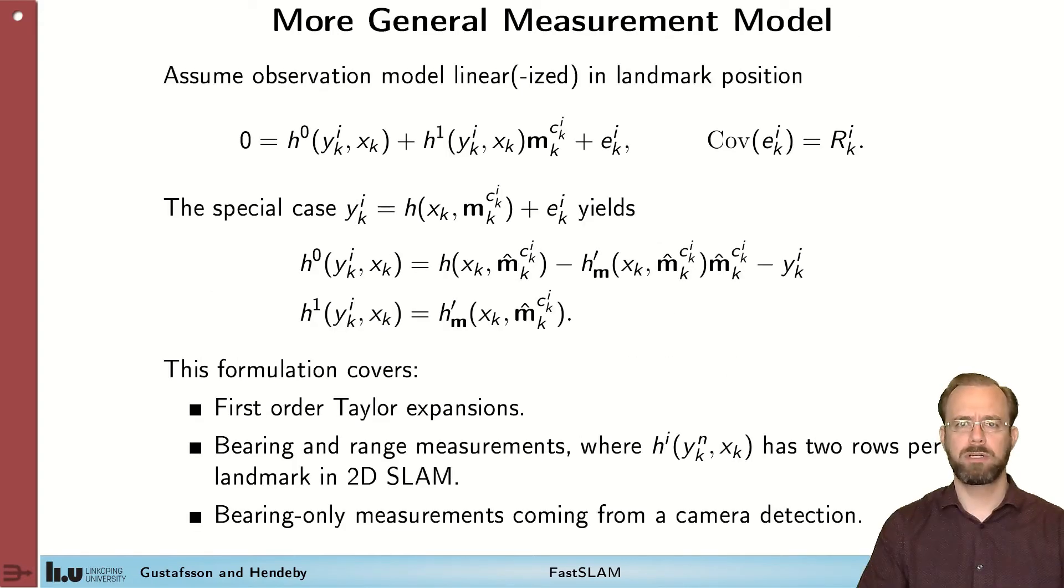Before I can go on and outline the FastSLAM algorithm, I'll have to reformulate the measurement equation on this form. I do it because we need to highlight the conditional linear behavior in terms of the map, which is necessary for the marginalized particle filter to work out. And because this is a form that is quite generally applicable. For our normal measurement, H_0 and H_1 up here can be given by these expressions here, so they fit.